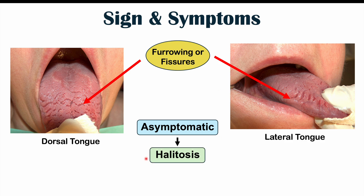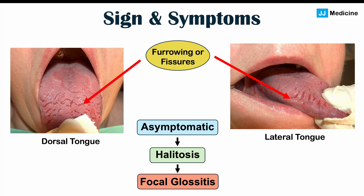However, in some cases patients can have halitosis — bad, stinky breath. This occurs because bacteria can enter into those deep fissures, and food particles can get trapped within them, leading to a smell. Patients with this condition can develop bad breath. Because of that buildup of food particles and bacteria, there can also be some local inflammation of the tongue, or focal glossitis, presenting as red spots. With focal glossitis, there may be some pain, soreness, or a burning sensation.